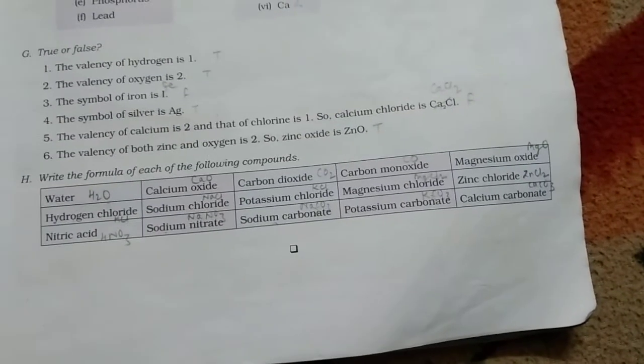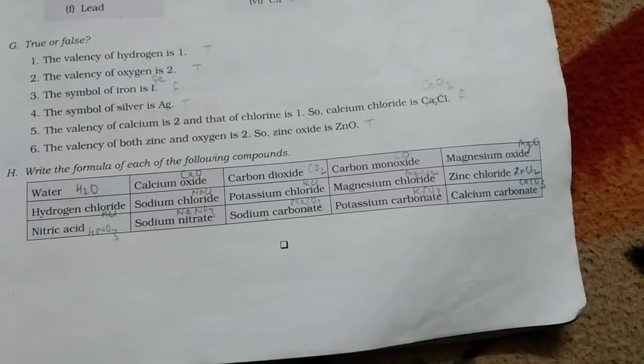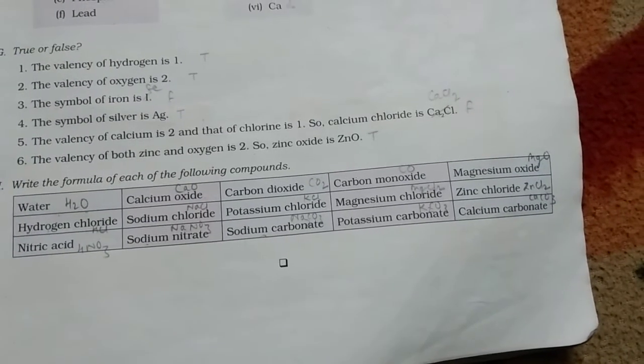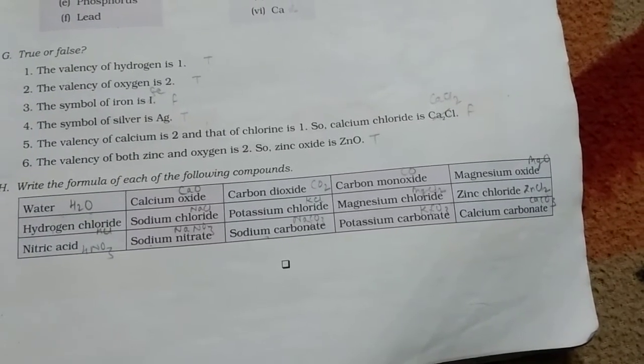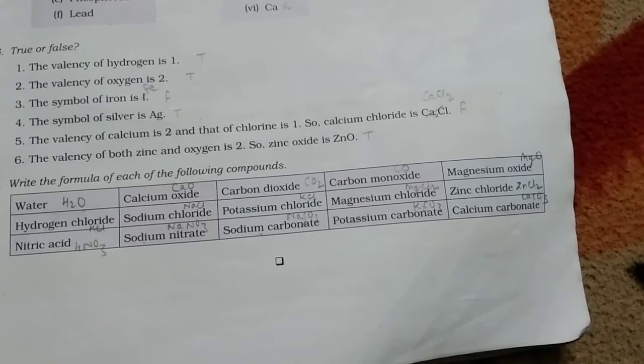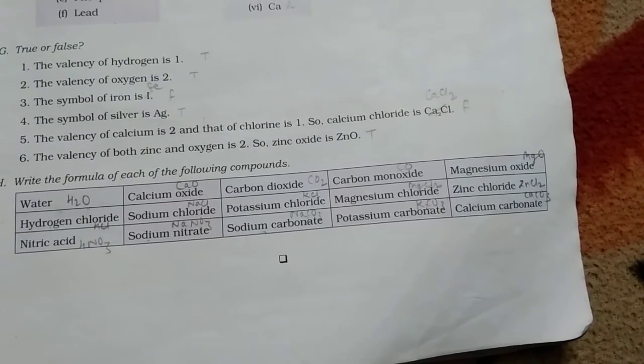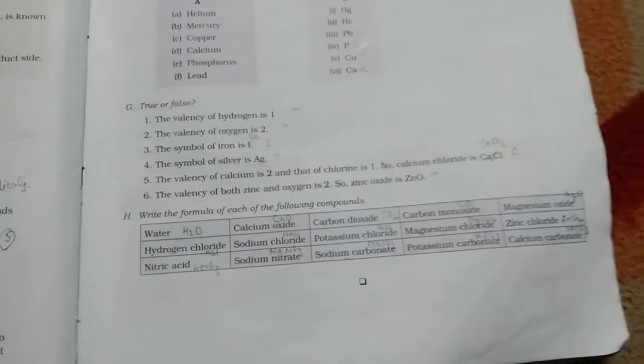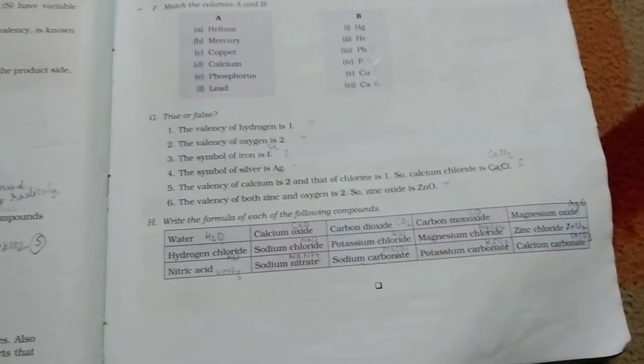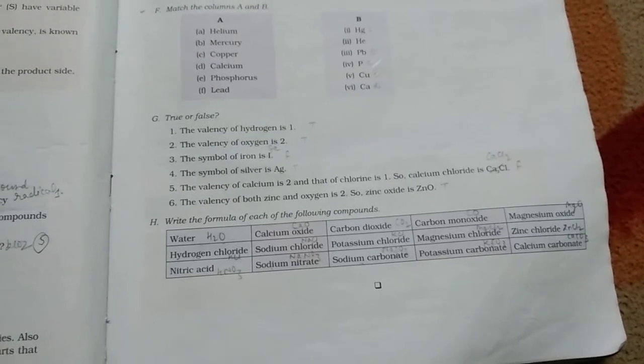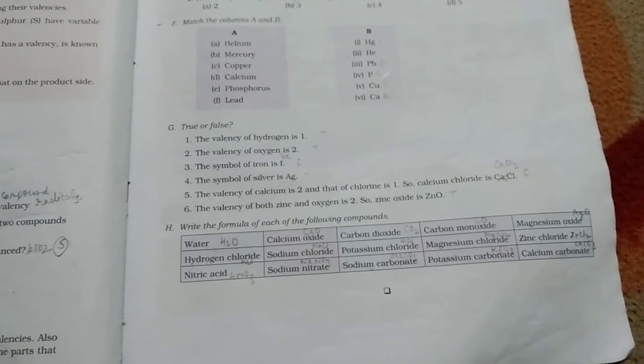Nitric acid, HNO3. Sodium nitrate, NaNO3. Sodium carbonate, Na2CO3. Potassium carbonate, K2CO3. Calcium carbonate, CaCO3. Okay, children, you will do all the book work in your book and do all the questions in your notebook very neatly. Goodbye, everyone.